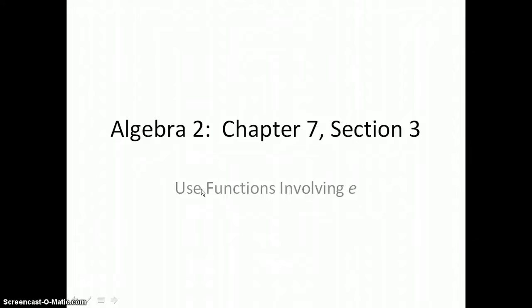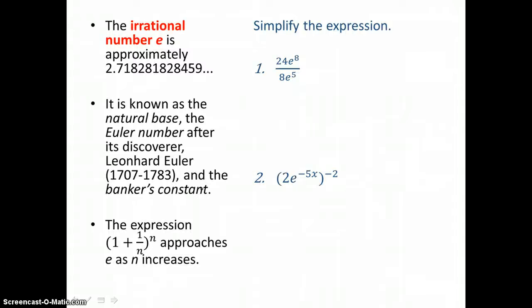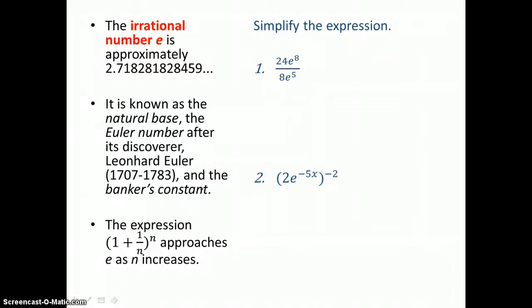In lesson 7.3, you will use functions involving e. e is an irrational number like pi. It can be approximated to 2.7. It's known as the natural base, the Euler number, or the banker's constant.